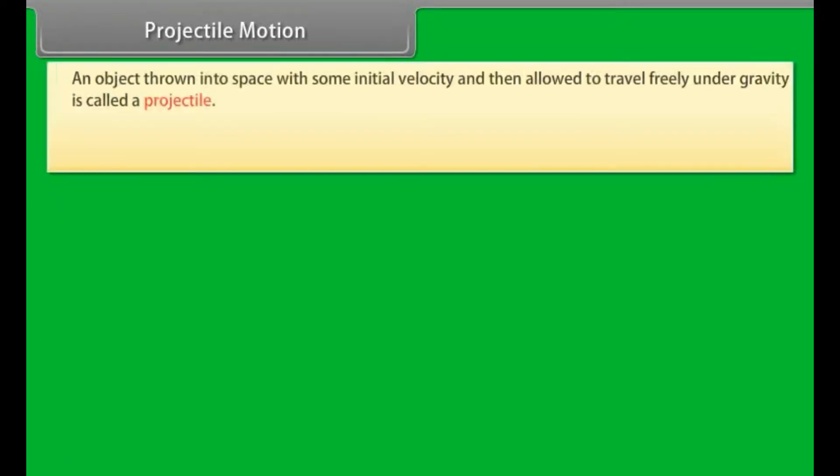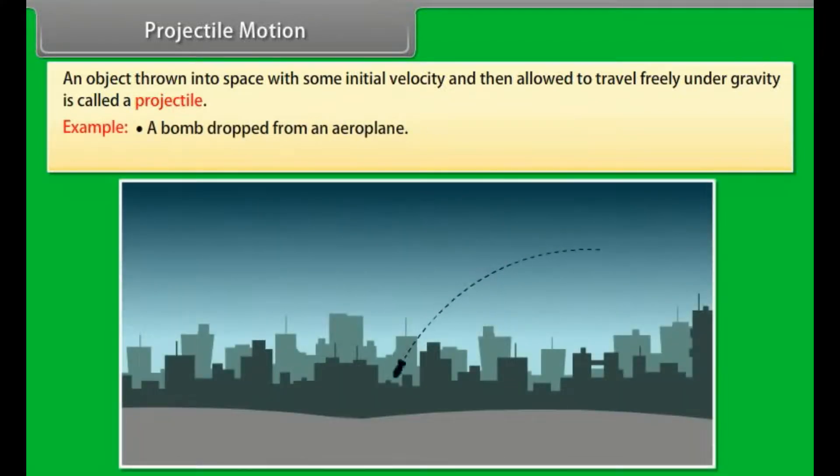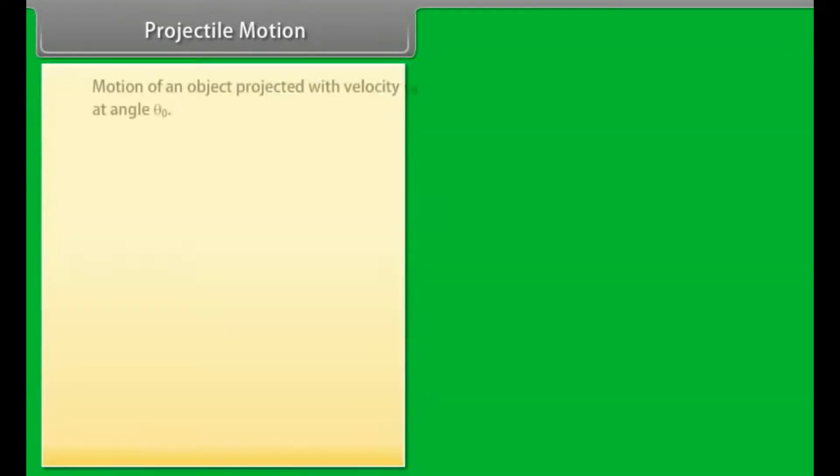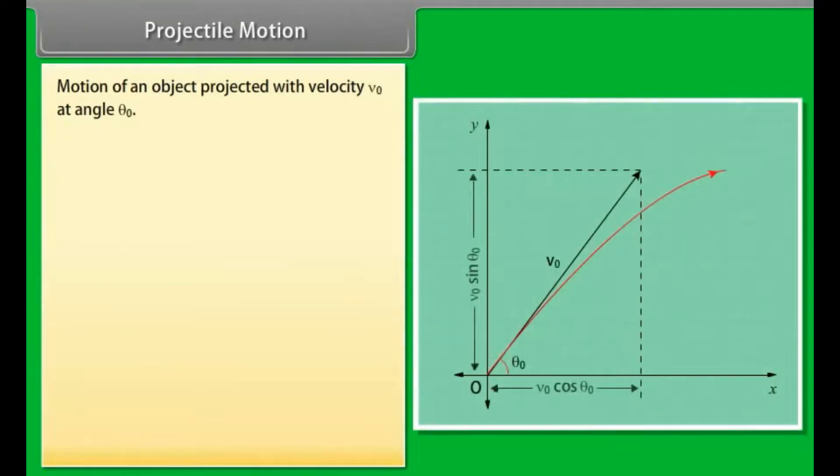Projectile motion. An object thrown into space with some initial velocity and then allowed to travel freely under gravity is called a projectile. For example, a bomb dropped from an aeroplane, a cricket ball hit by a batsman.